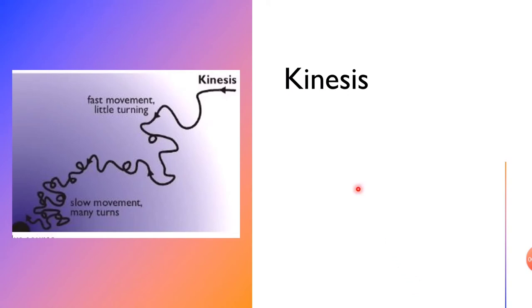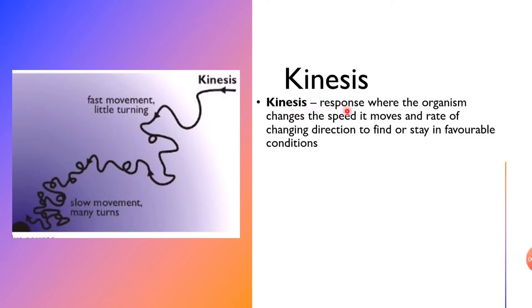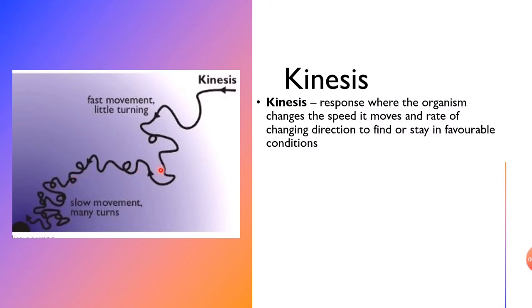The next form of movement is kinesis. Kinesis is a response where the organism changes its speed and the rate of changing direction to find or stay in favorable conditions. As seen in the diagram, changing direction can be less frequent in some areas, but in others the changing of direction is very rapid. The organism changes its speed and rate of direction change to stay in or find a favorable condition.